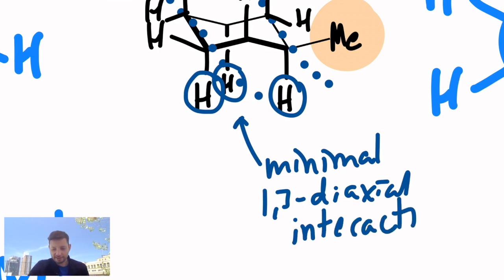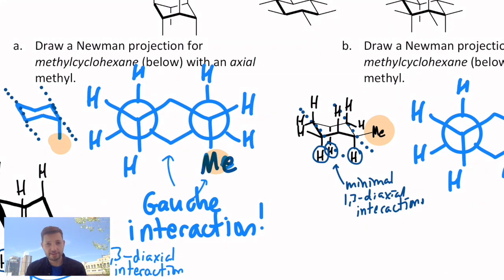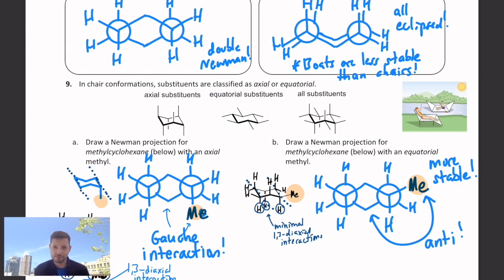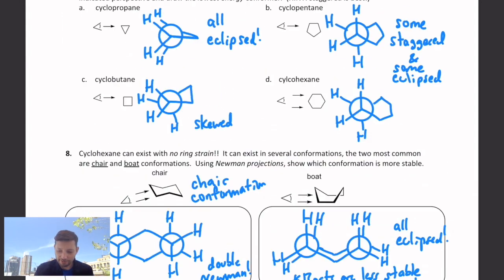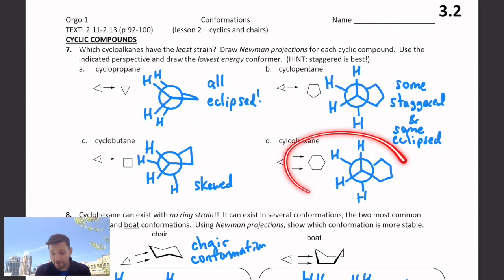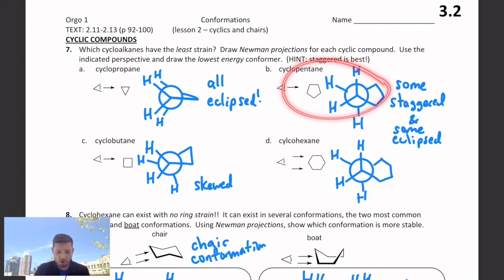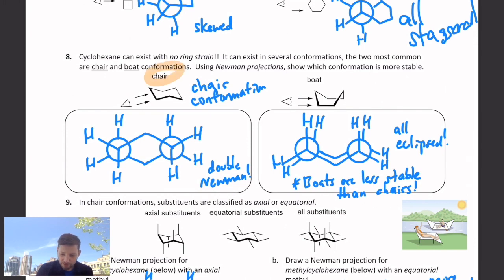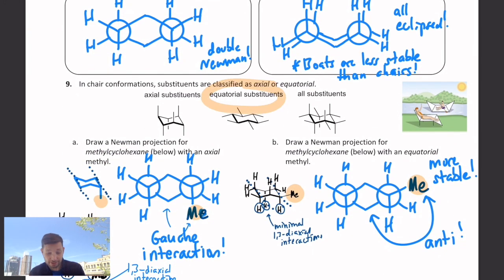So all of that is to say that equatorial substituents are more stable than axial substituents — equatorial is preferred, if possible. We'll come back to what we do if we have multiple groups on a ring where they can't all be equatorial. To summarize: molecules in rings are really stable up to a six-membered ring — five-membered rings are pretty good, but six is the best because you can get an all-staggered conformation. Chairs are better than boats, and equatorial is better than axial when you have a single substituent on a chair.